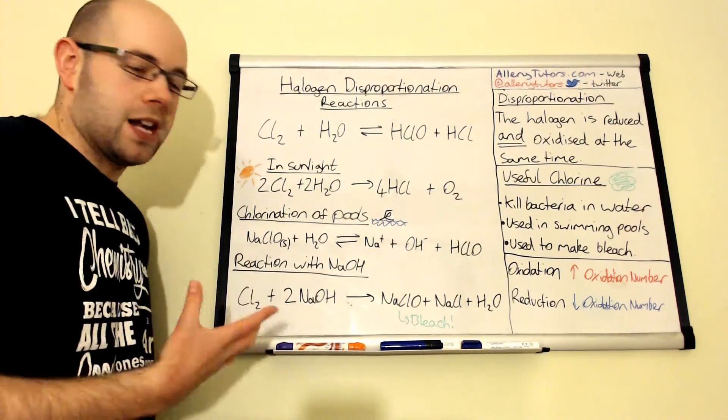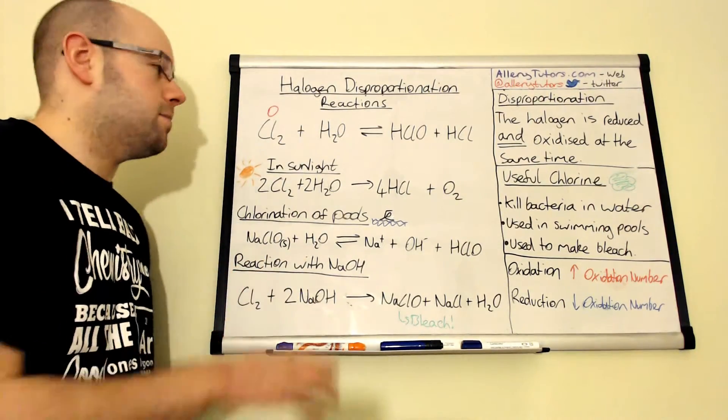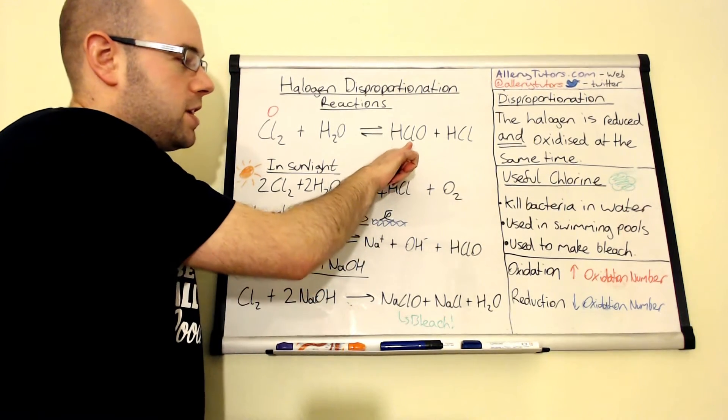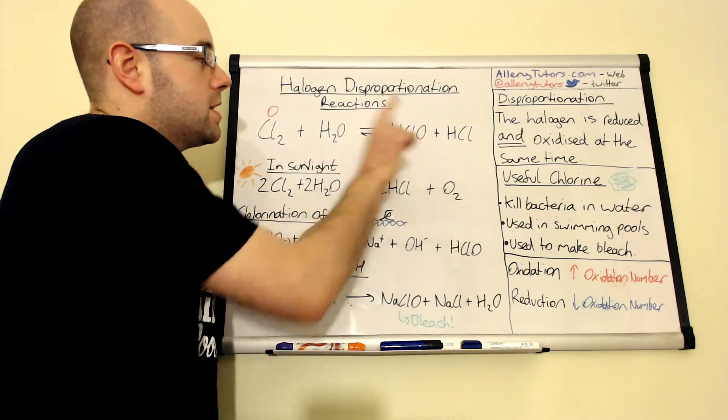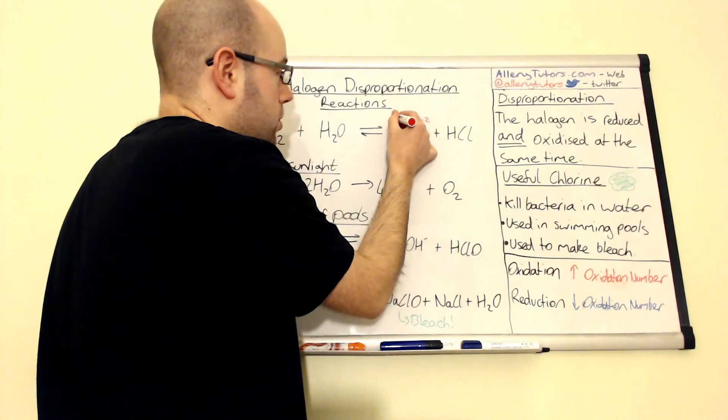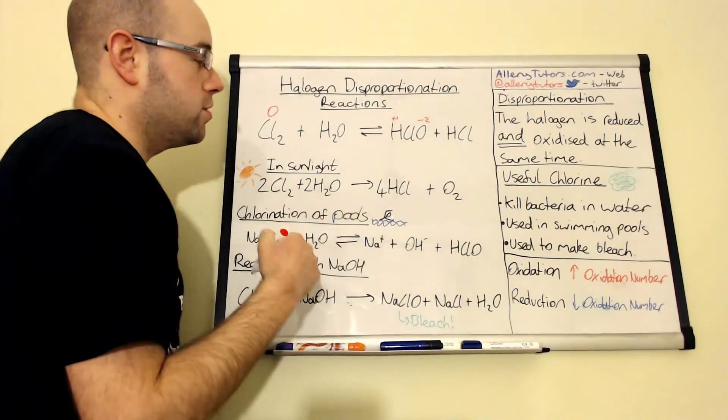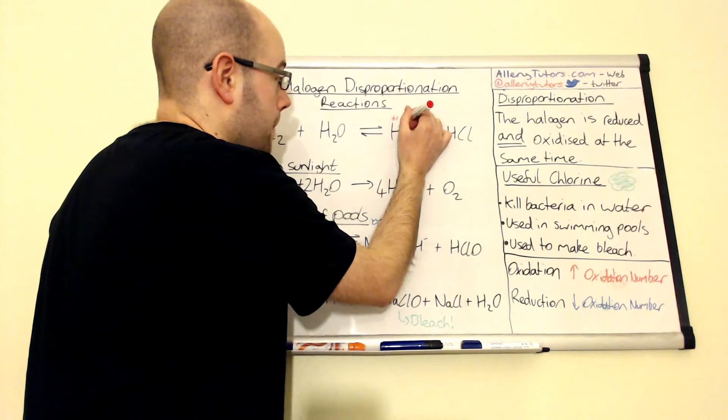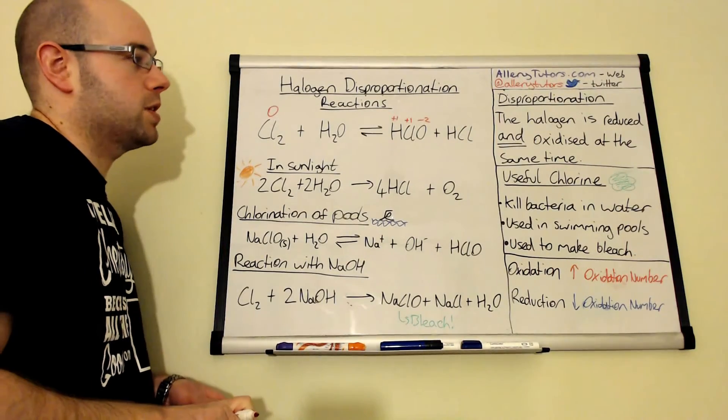Chlorine as a halogen has an oxidation state of zero because it's an element. If we come over here and work out the oxidation state or oxidation number of chlorine over here, we can see that oxygen is minus two and hydrogen is plus one. So that must leave, the molecule being neutral, that must mean that your chlorine is actually plus one in this state here because it works out from the other ones.